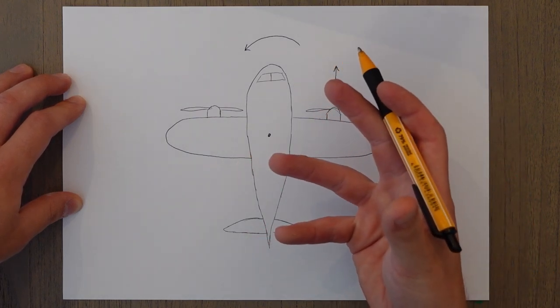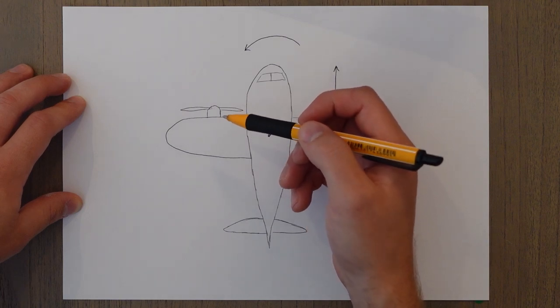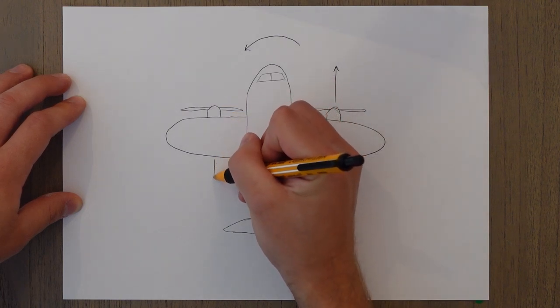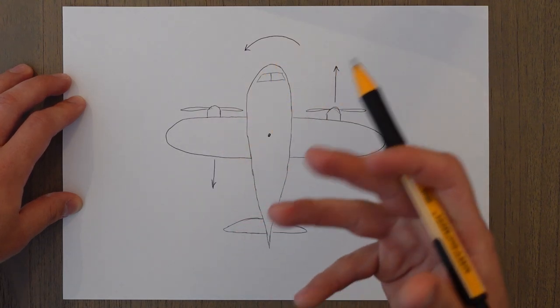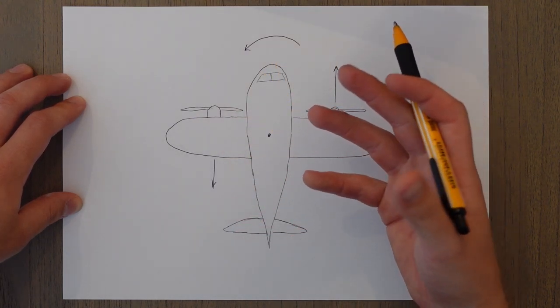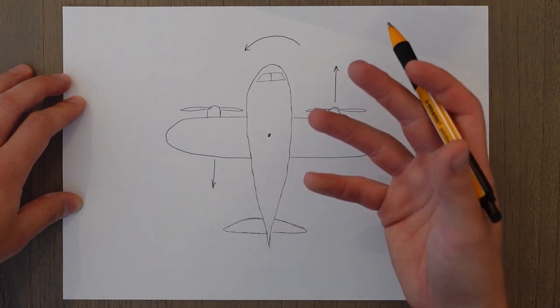In propeller driven aircraft, a windmilling propeller will also create an additional drag force which adds to this overall yawing moment. That is until the windmilling propeller has been feathered to reduce the amount of drag.